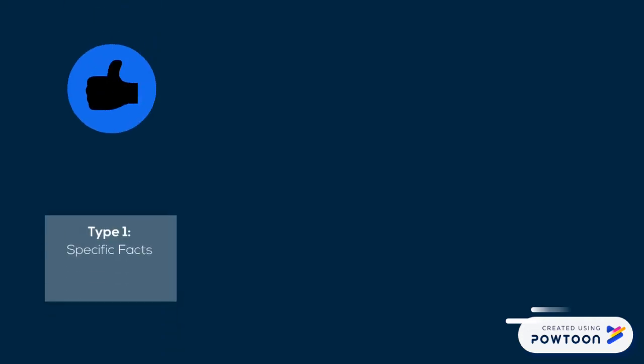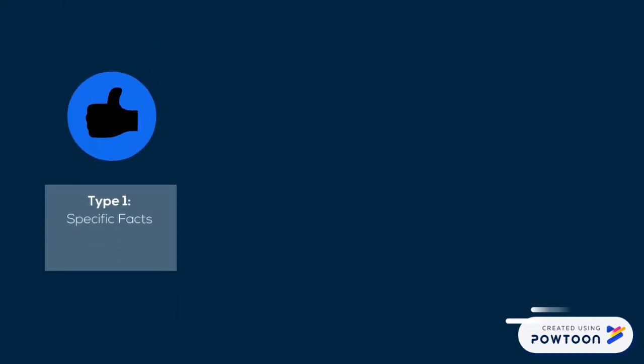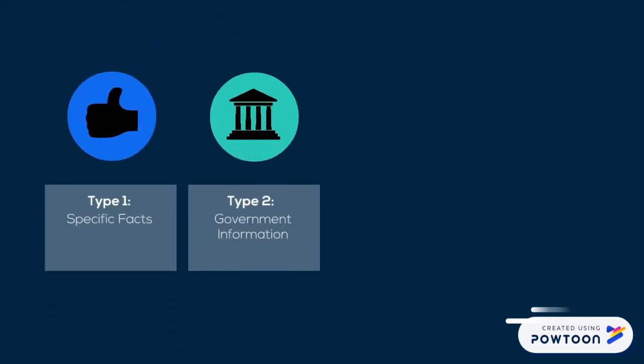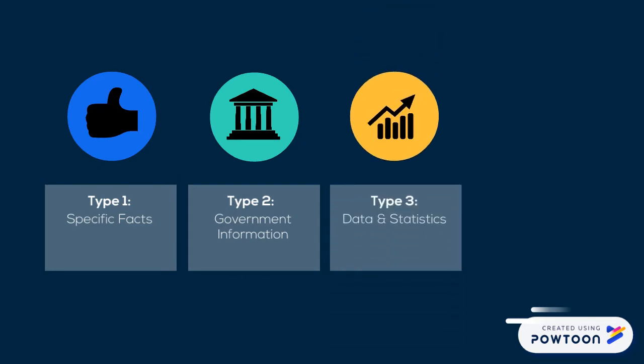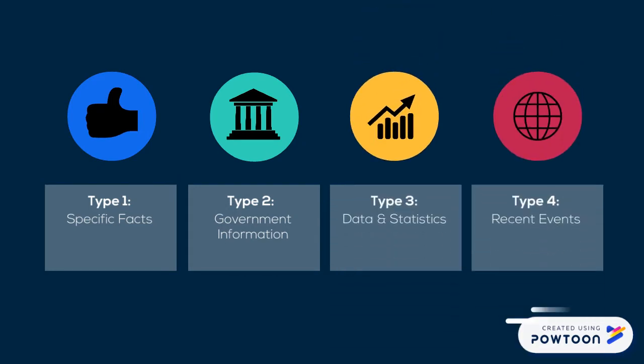There are four types of information that are easier and faster to locate online: specific facts, government information, data and statistics, and recent events.